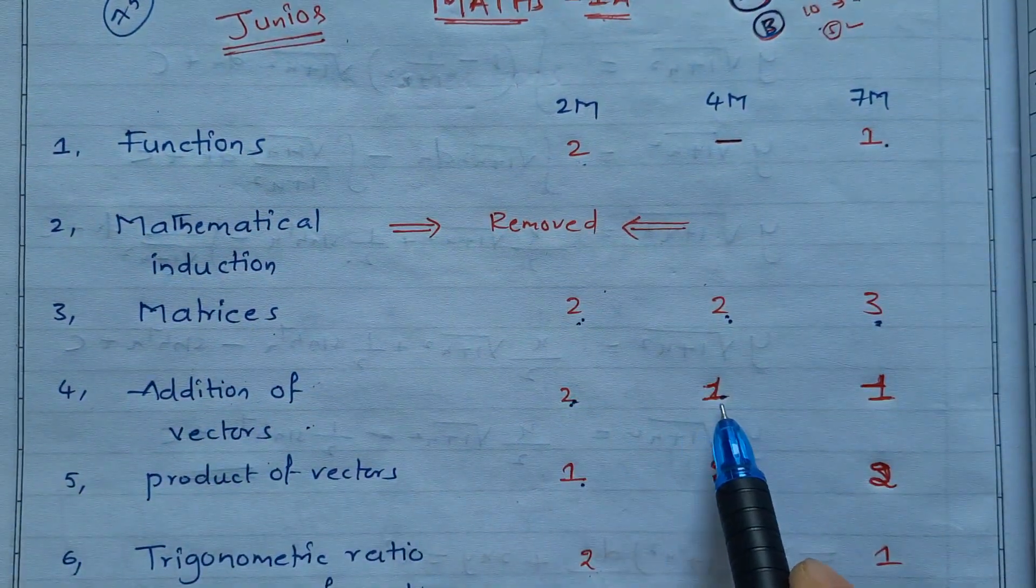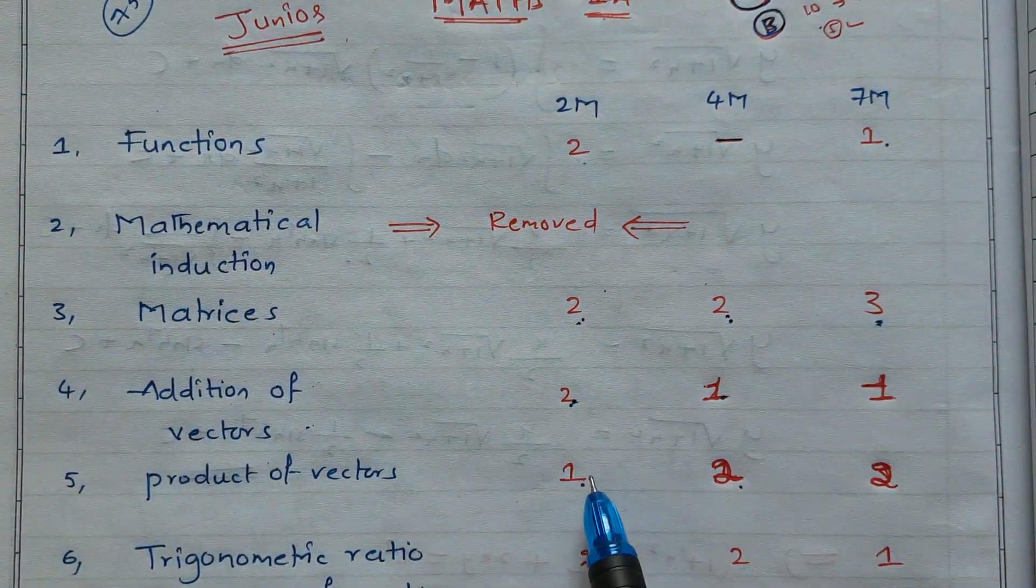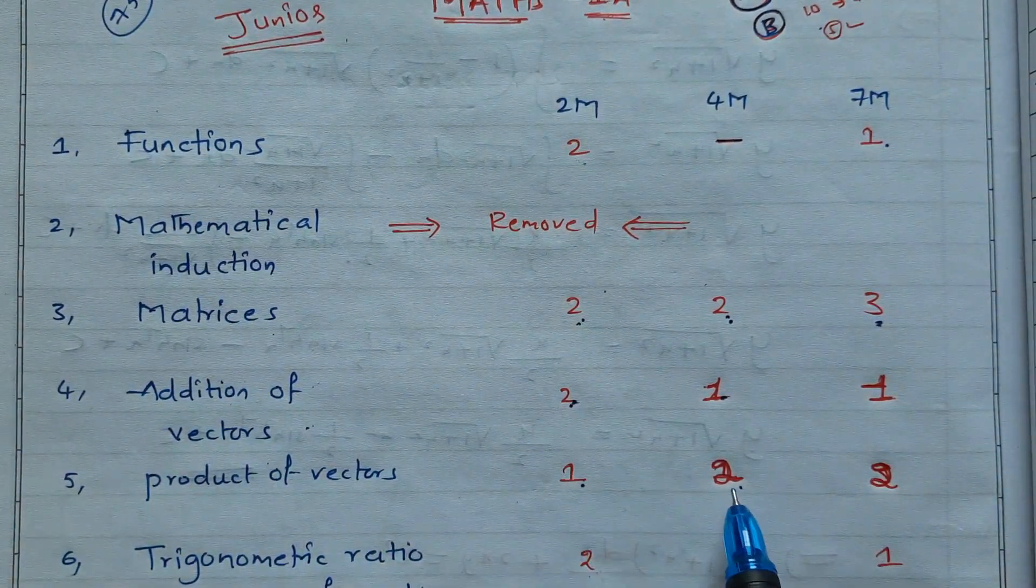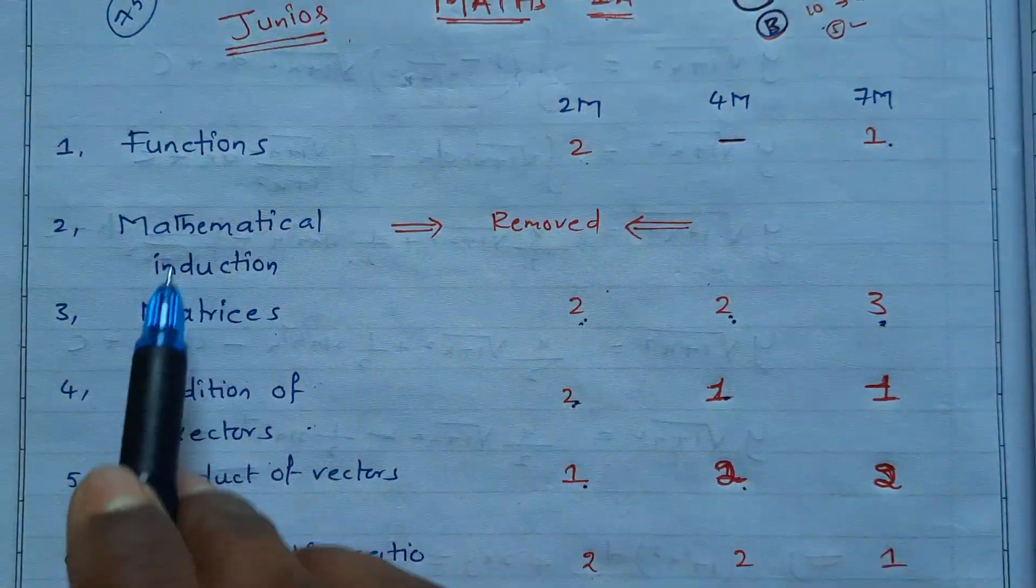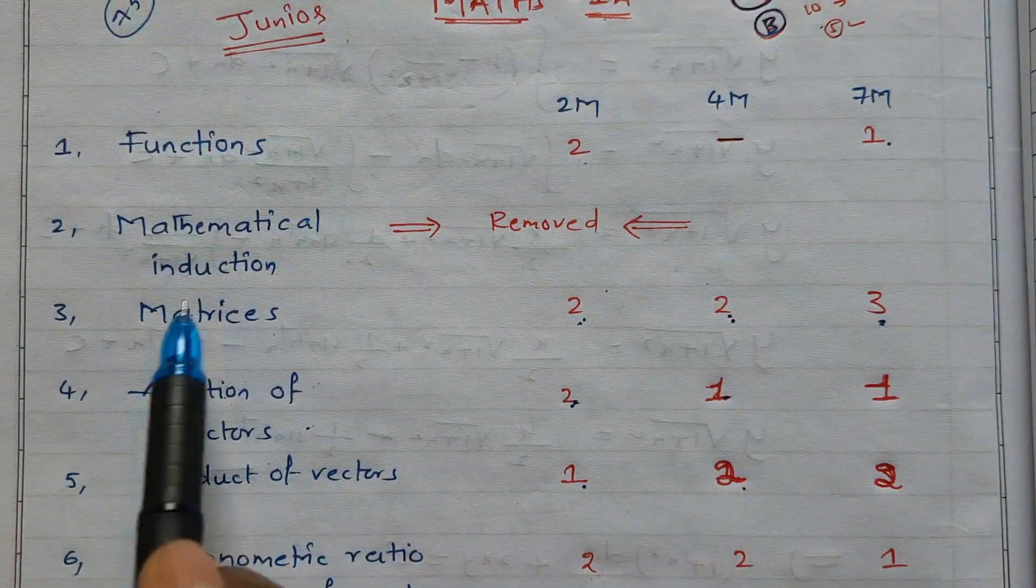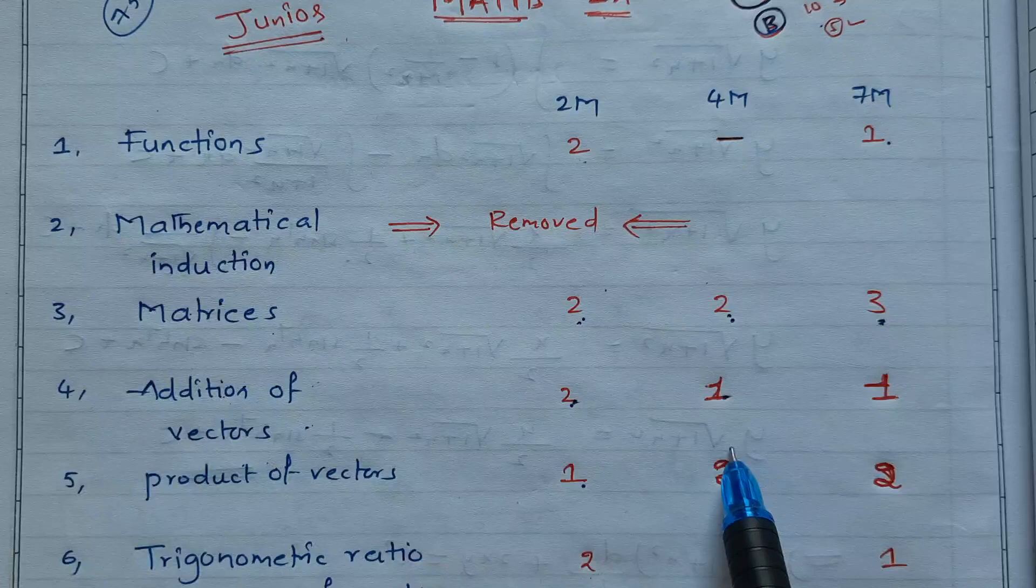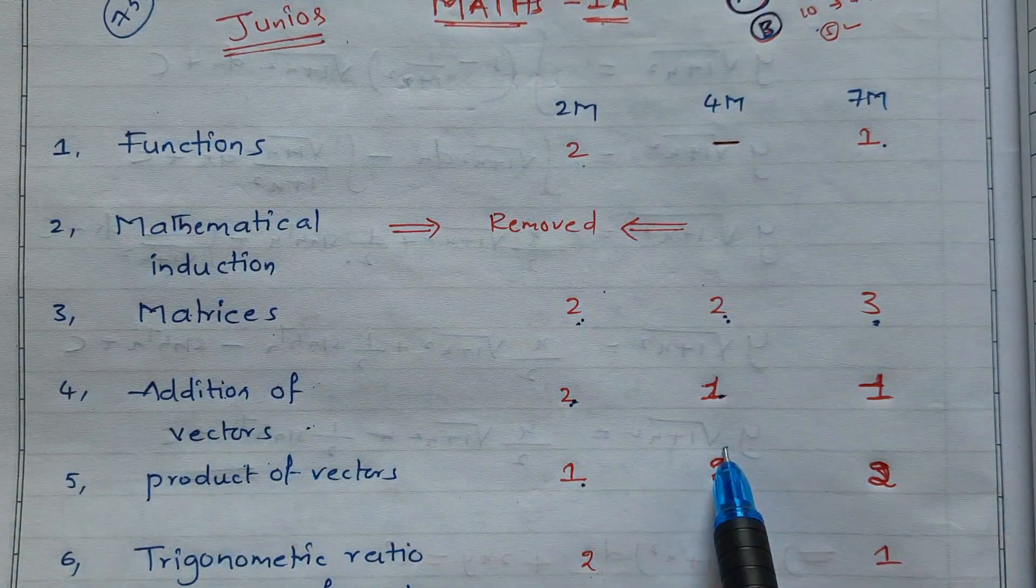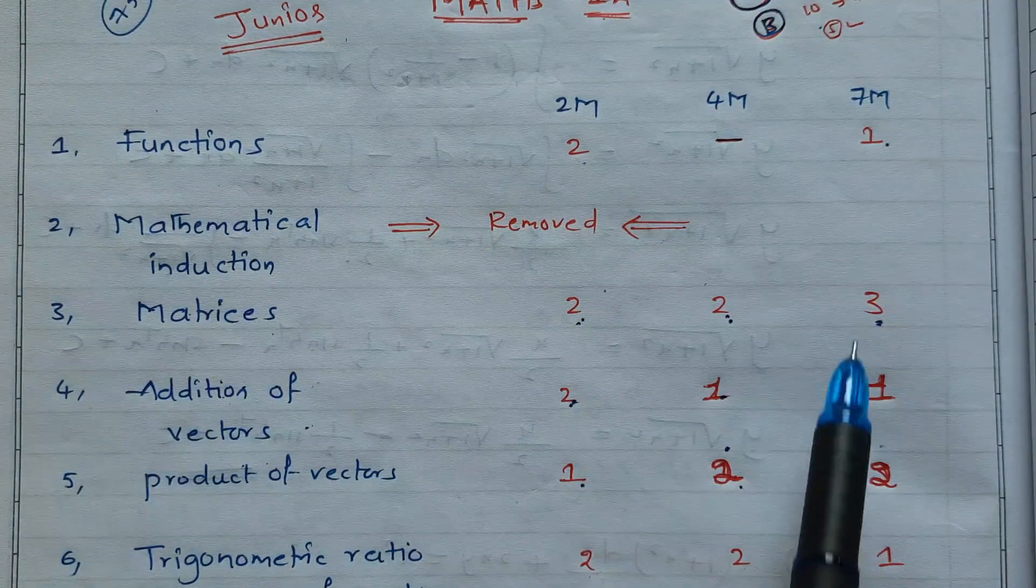Product of vectors - one two-mark question, two four-mark questions, two seven-mark questions. Matrices, addition of vectors, product of vectors first complete. 35 marks, 20, 45, sorry 55 marks. 10 more, 65 marks.